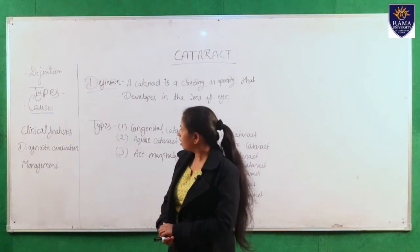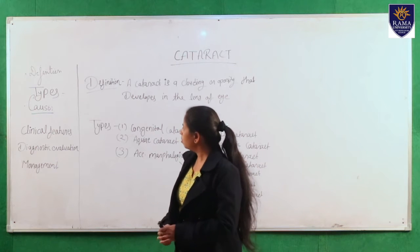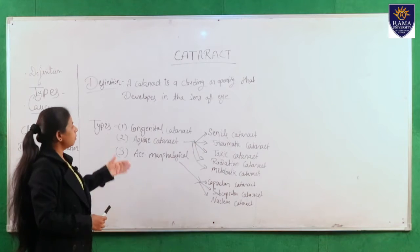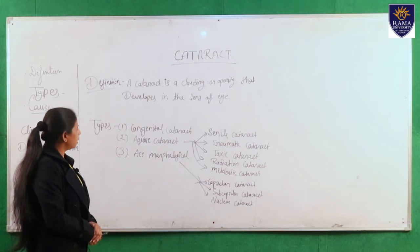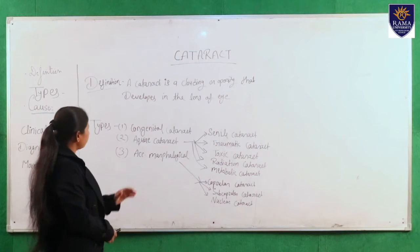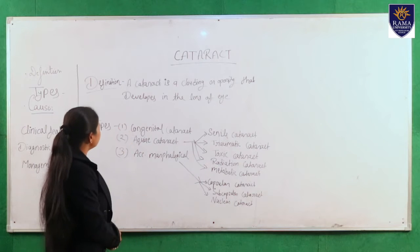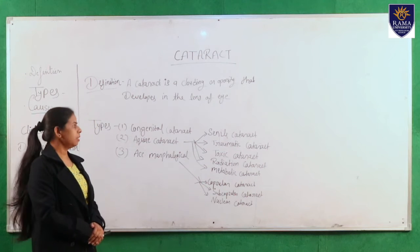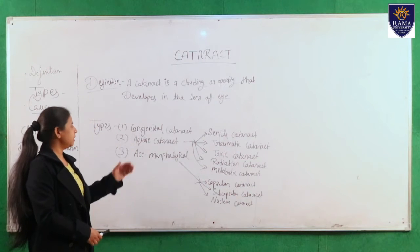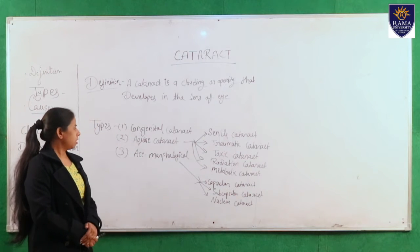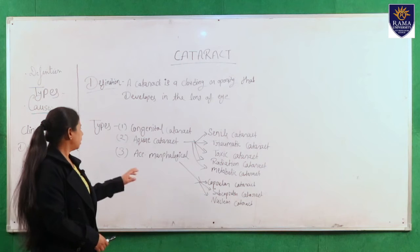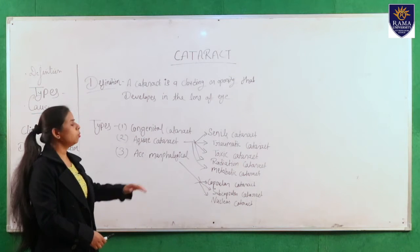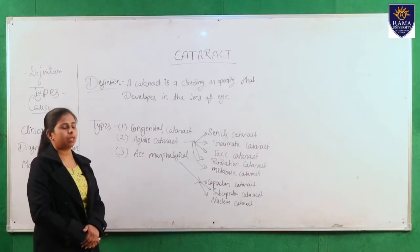Now I will discuss about types. Many types are there. First is congenital cataract. Second is acquired cataract. And third one is according to morphological classification.